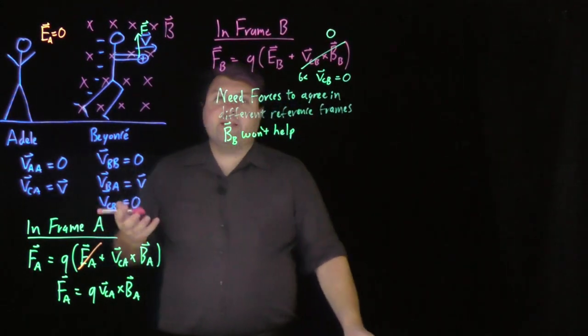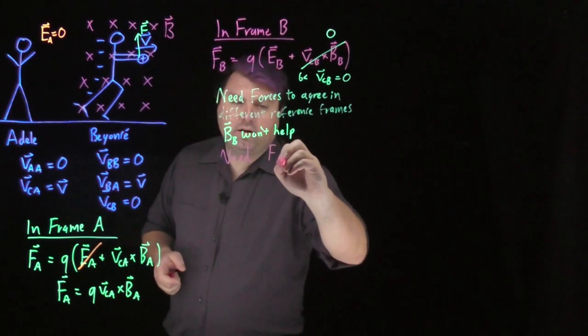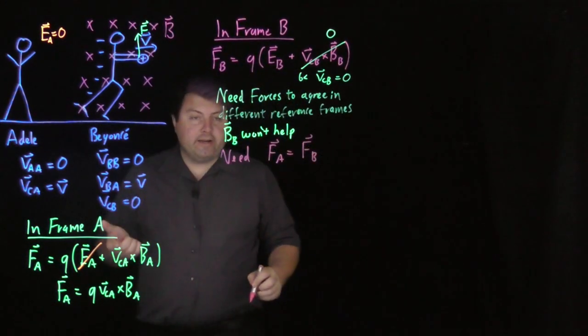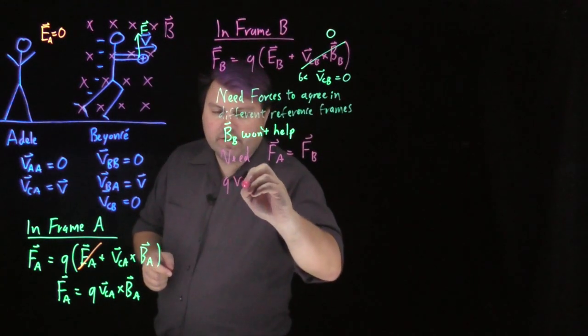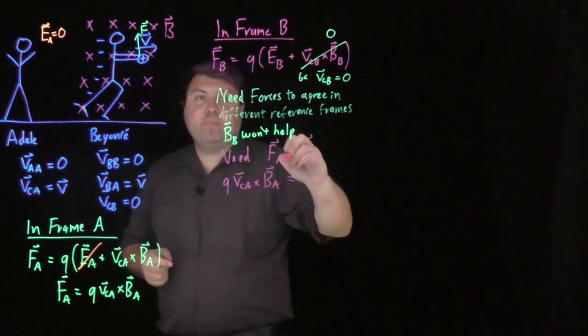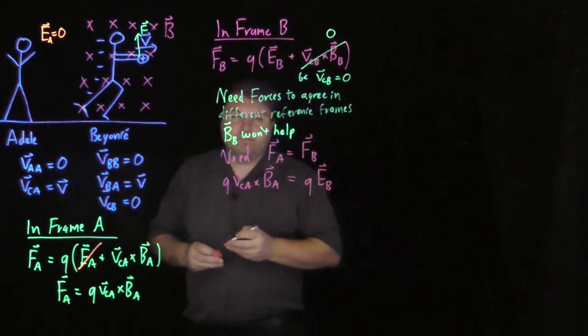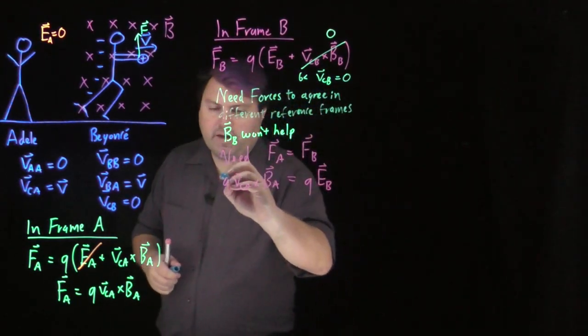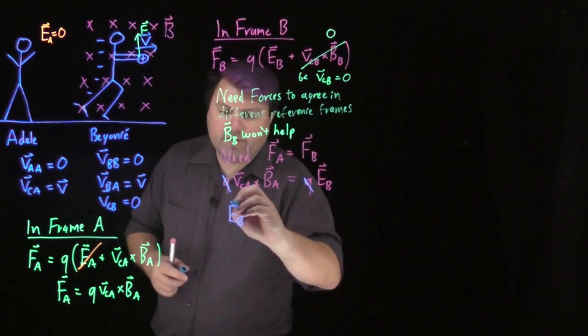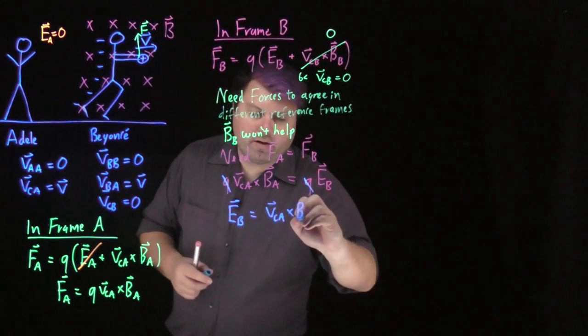What does this mean? What's left to provide the force? Because we know we need F sub A to equal F sub B. Well, let's write it in. F sub A is Q VCA crossed with B sub A. And FB is Q times EB. So very easily we can cancel out the Qs. And so what we get is we get the electric field in region B is VCA cross BA.